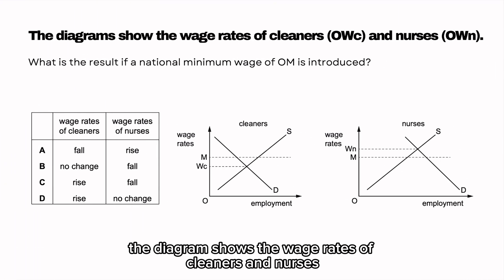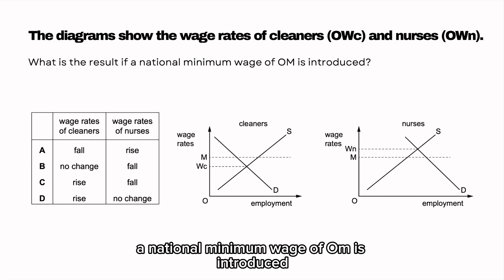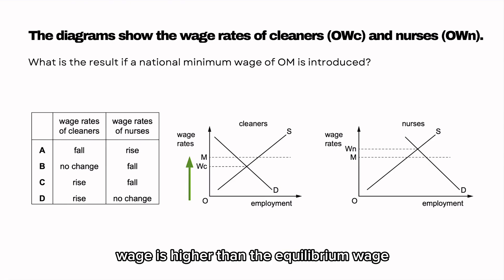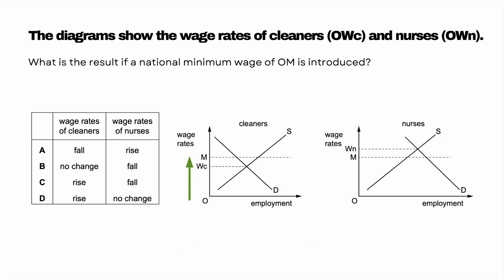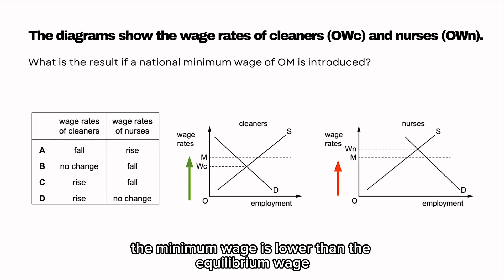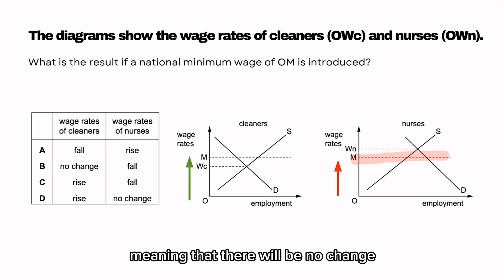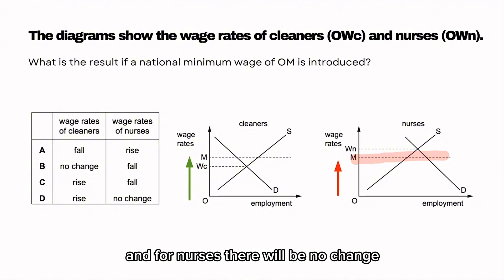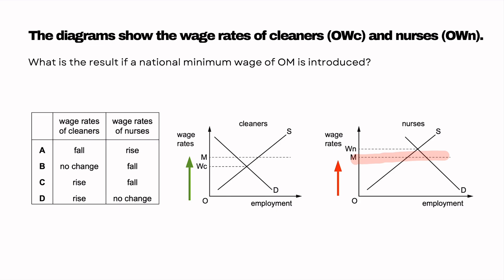The diagram shows the wage rates of cleaners and nurses. What is the result if a national minimum wage of OM is introduced? For cleaners, the minimum wage is higher than the equilibrium rate, so their wages rise. For nurses, the minimum wage is lower than the equilibrium rate, meaning there will be no change. Quick recap: for cleaners the wage benefits them so their wages rise, and for nurses there will be no change. So the answer is D.